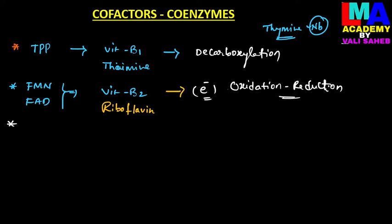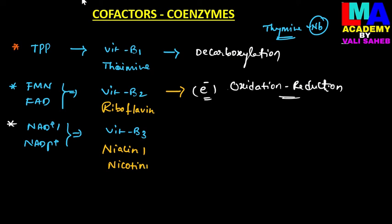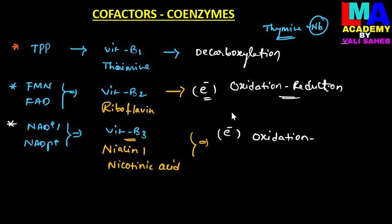NAD⁺ and NADP⁺ are also coenzymes derived from vitamin B-3, whose chemical name is niacin or nicotinic acid. Both are involved in the transfer of electrons from one substrate molecule to another substrate molecule during oxidation and reduction reactions.